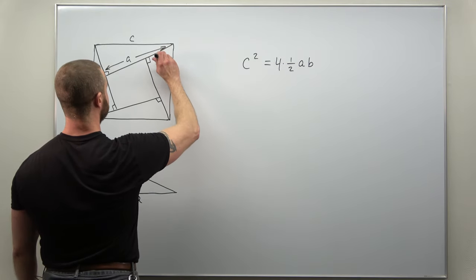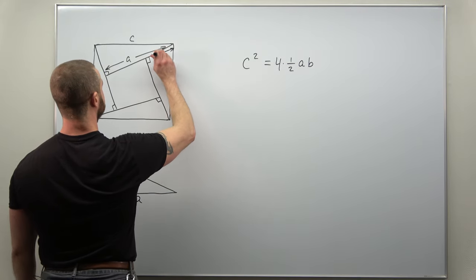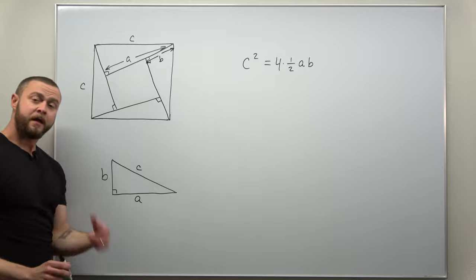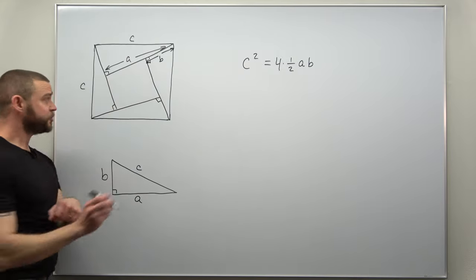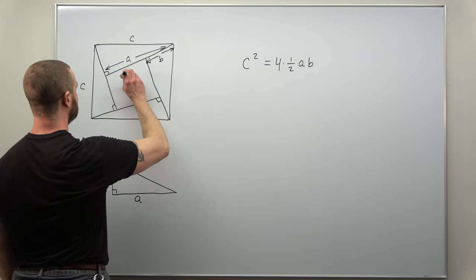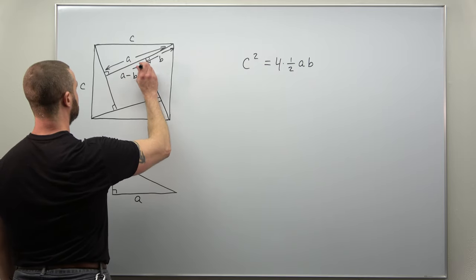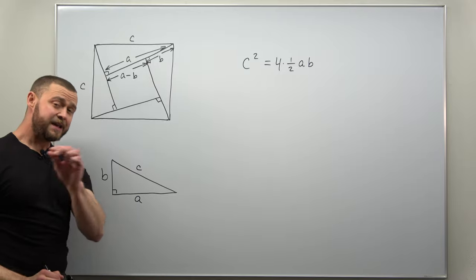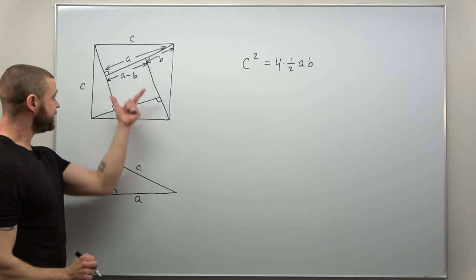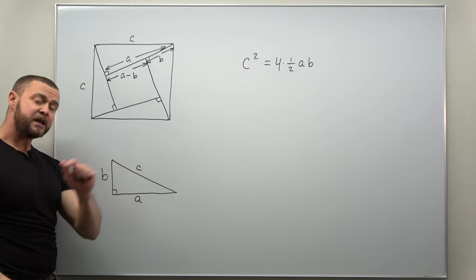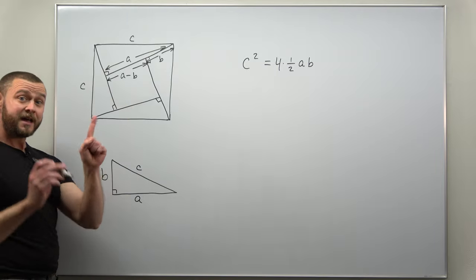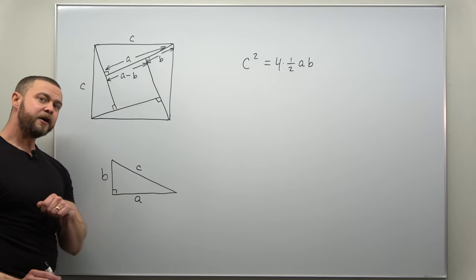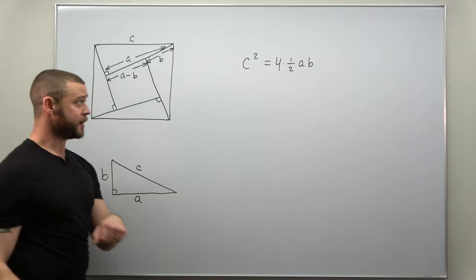So that length right there is B. And if we want that length, just subtract, that would be A minus B. So what we have in the middle inside is a square of side length A minus B. Area of a square is the side length squared.